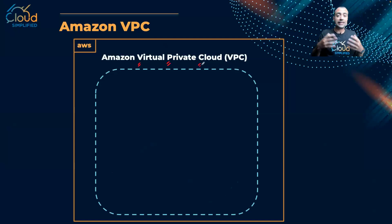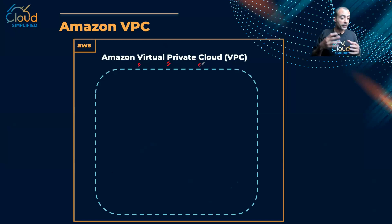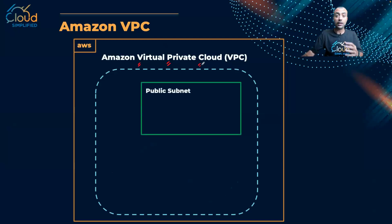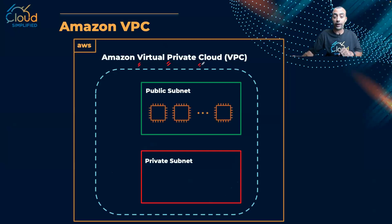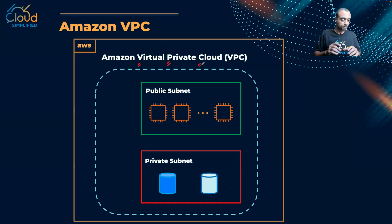VPC stands for Virtual Private Cloud. If you want to explain what exactly a VPC is, think of it as a virtual data center — this is where you host your virtual services. Inside this virtual data center, inside the VPC, you can host your resources either inside something called a public subnet or something called a private subnet. Let's explain what exactly the difference is.